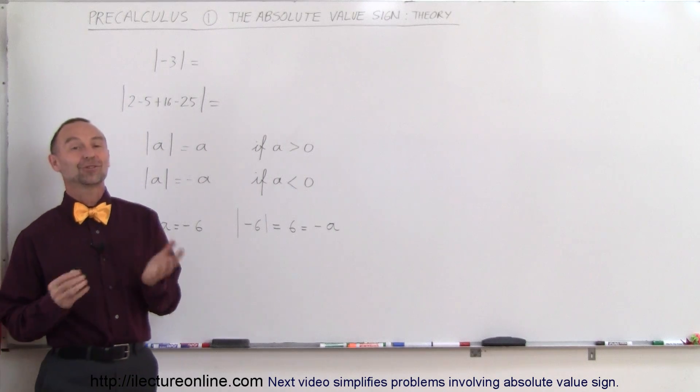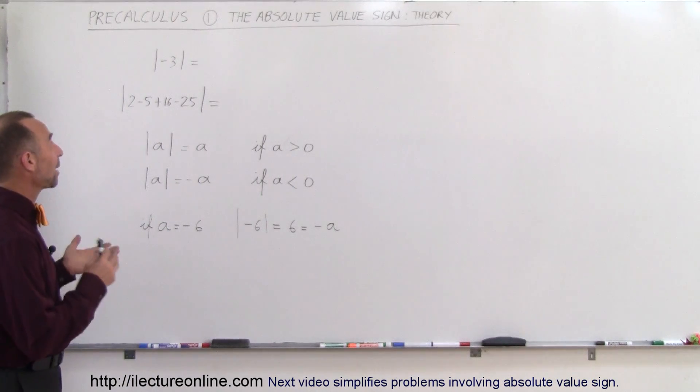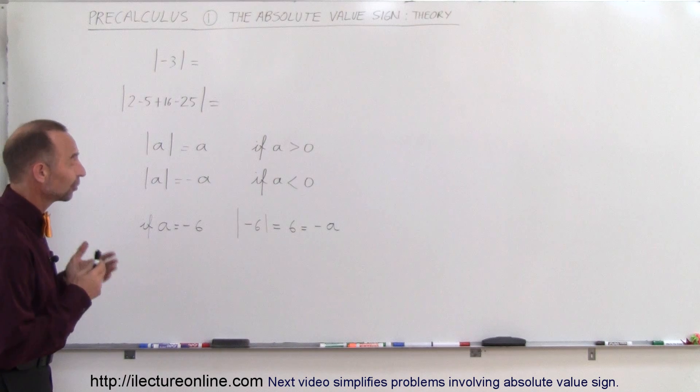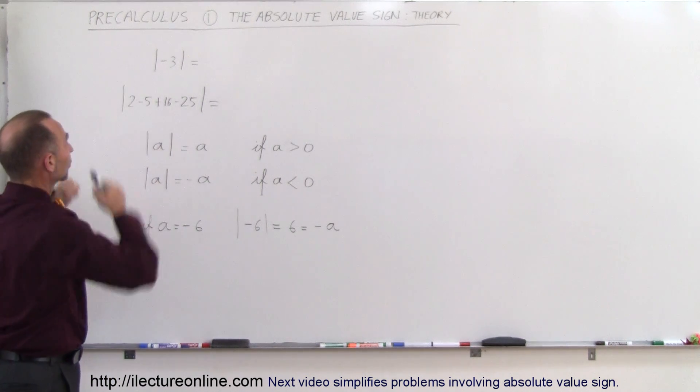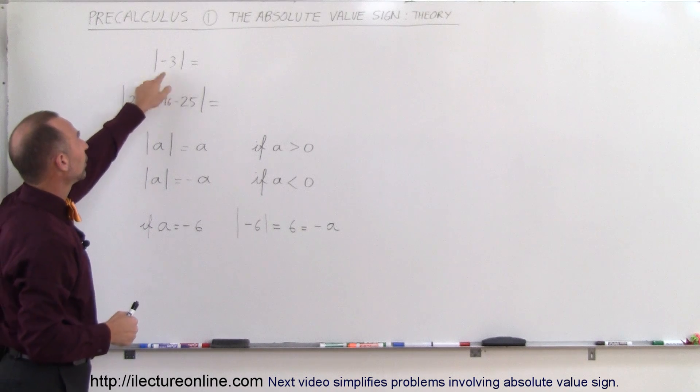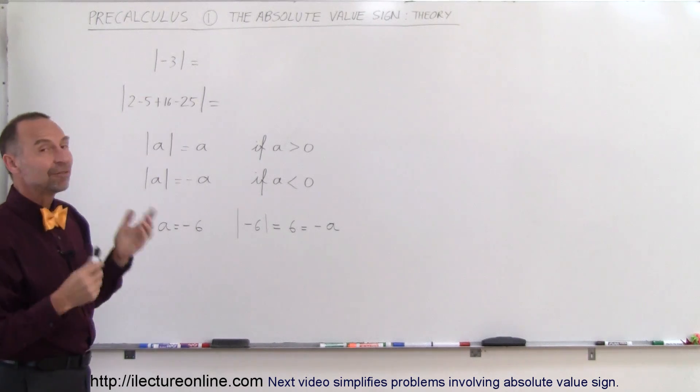Welcome to ElectronLine. Our first topic in pre-calculus is the absolute value sign or symbol. And so what that means is whenever you see vertical lines like that around the number, we just take the positive value of that.